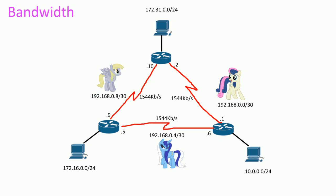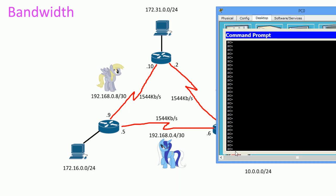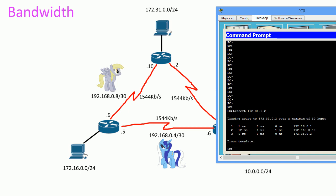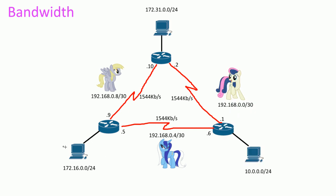Let's go to that PC and do a traceroute to that network. Right away we can see our default gateway is the first hop, the second is the next router, and then our destination.